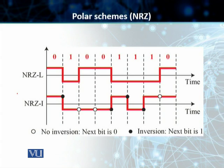And therefore, the receiver will have difficulty interpreting the bit value. Another disadvantage is that the value of the power density is very high around the frequencies that are close to zero. And when that happens, we say that the signal contains a DC component, which is bad for the receiver to retrieve the signal.